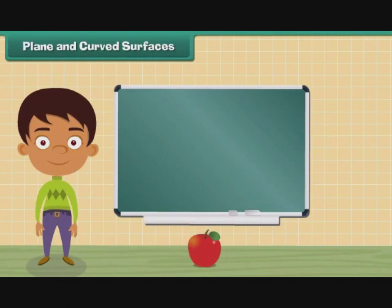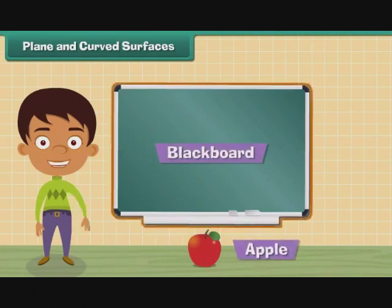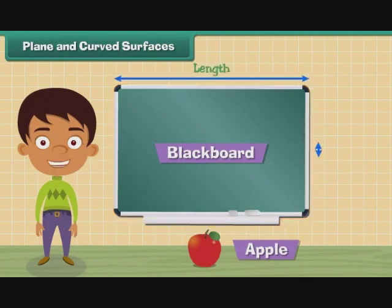Plane and curved surfaces. Look at these two objects: a blackboard and an apple. The blackboard's plane surfaces are its surfaces which have length and breadth. When you touch the surface of an apple, its surface is not straight. This is a curved surface.